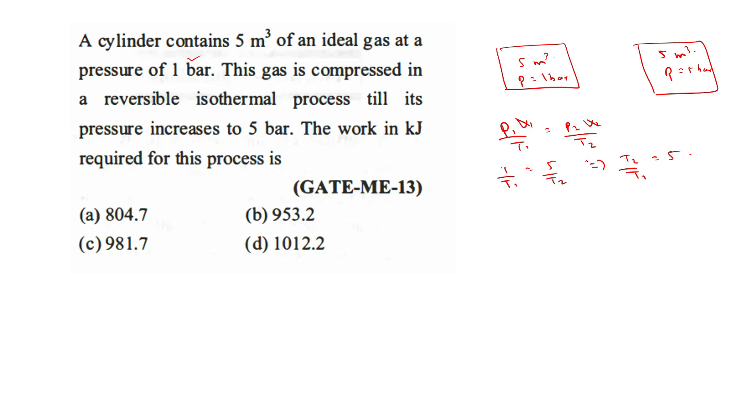Work done in the process: the formula for isothermal process is P1 V1 log T2 by T1. So P1, 1 into 10 raised to 5, into 5 meter cube, into log T2 by T1, it is 5.